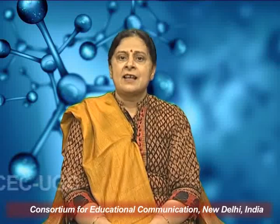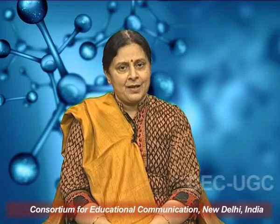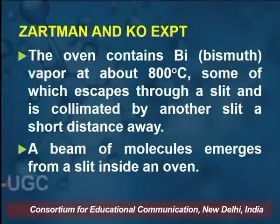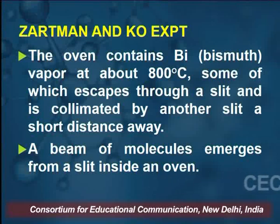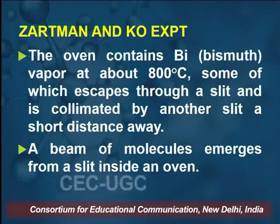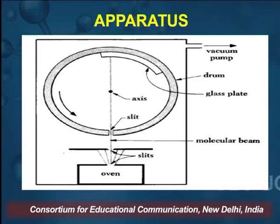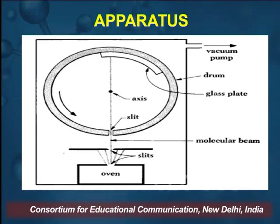In the Zartman and Coe experiment, the apparatus consists of an oven containing bismuth vapour at about 800°C. The bismuth vapours escape through a slit and are collimated by another slit a short distance away, producing a narrow beam of molecules. Above the second slit is a drum that rotates about a horizontal axis at 6000 rotations per minute. A photographic film or glass plate is fixed inside the drum. When the slit in the drum faces the bismuth beam, a burst of molecules enters the drum.